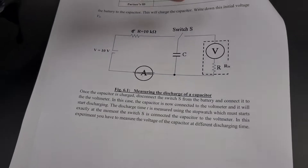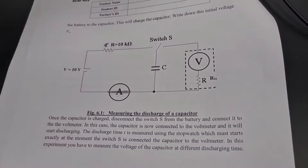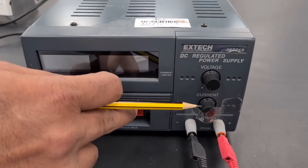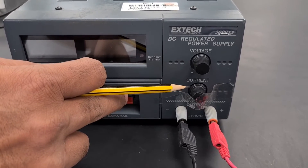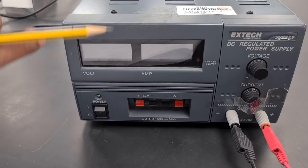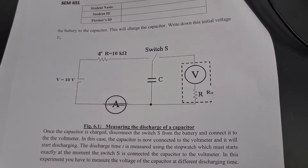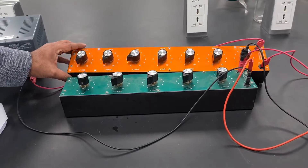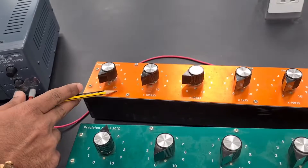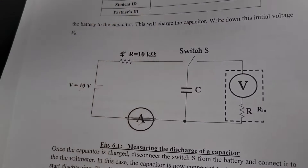Now I will describe the apparatus. Here we have a battery, and we have to give the input voltage here. There are two knobs: one for voltage adjustment and another for current adjustment. You should not touch the current knob — only use the voltage knob and set the voltage to 10 volts. If you look at this apparatus, we have two boxes: an orange colored box, which is the resistance box, and a green colored box, which is the capacitance box. We have to set 10 kilo ohms on the resistance box.